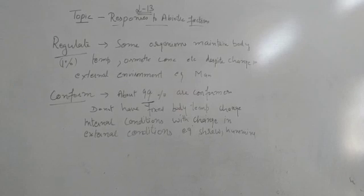Now the differences between regulators and conformers. Regulators have constant temperature, whereas conformers do not have. They are having the internal environment, that is homeostasis, but conformers do not have. Have fixed osmotic concentration, they do not have.